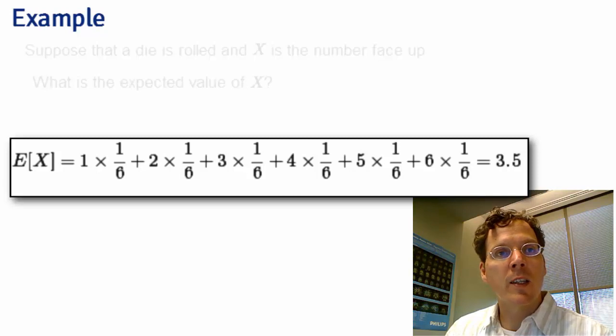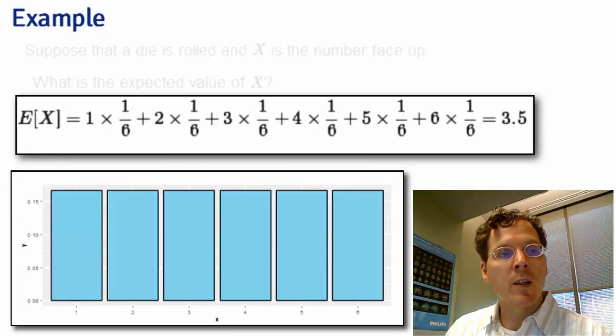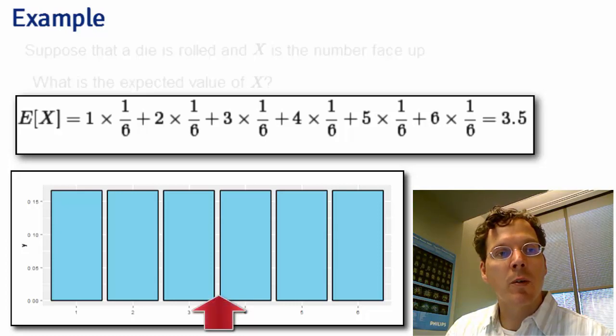Again, a number that the die can't actually obtain. The geometric argument makes this obvious. We have 6 bars, all of height 1 sixth, and if we had to balance them out, it's clear that we would balance them out at 3.5.